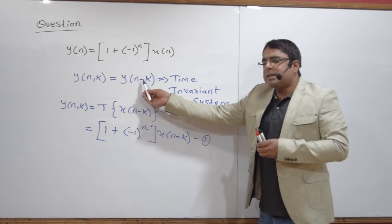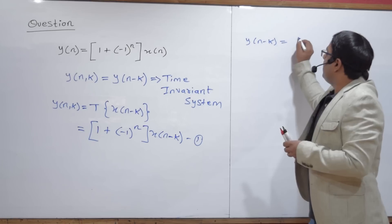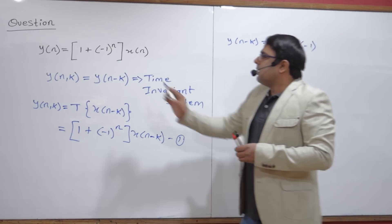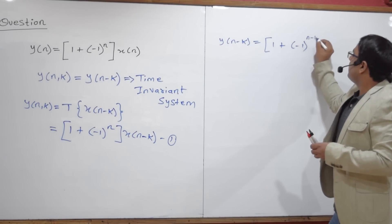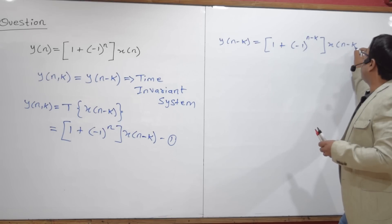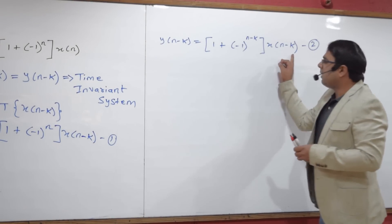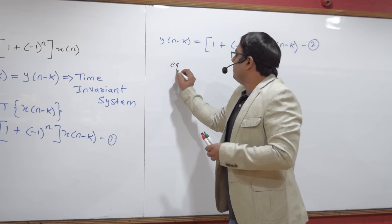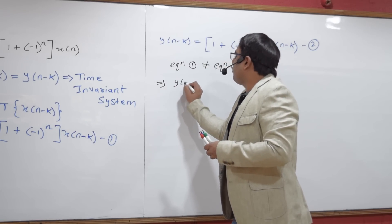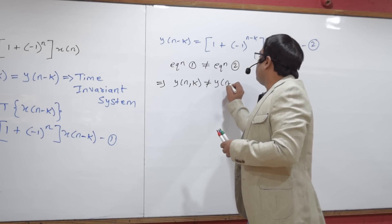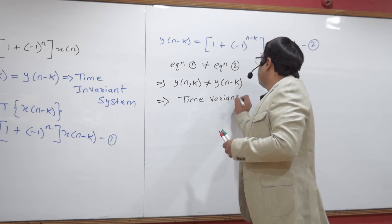Now, to check y(n − k), applying this on the given system: y(n − k) will be equal to (1 + (-1)^(n−k)) multiplied with x(n − k). Let us mark it equation number 2. Clearly we can see equation 1 and equation 2 are not equal — y(n, k) is not equal to y(n − k). So we conclude this is a time variant system.